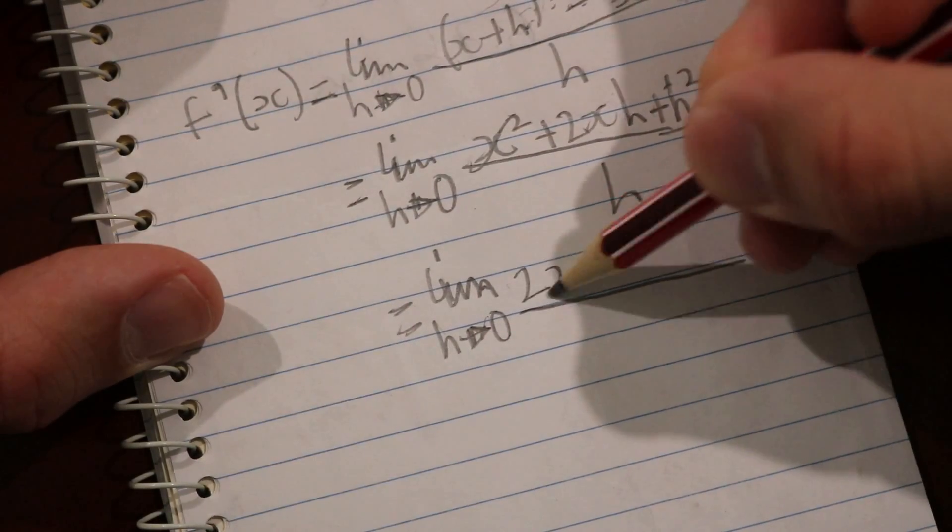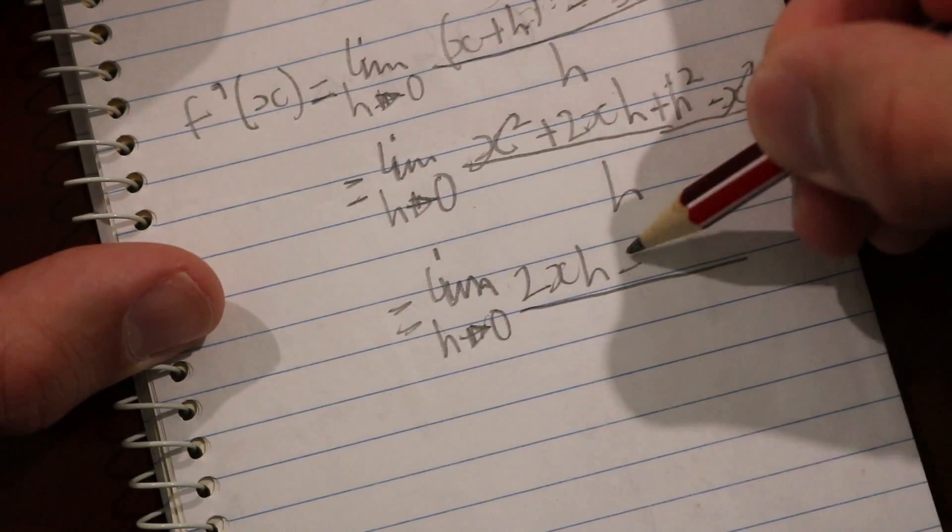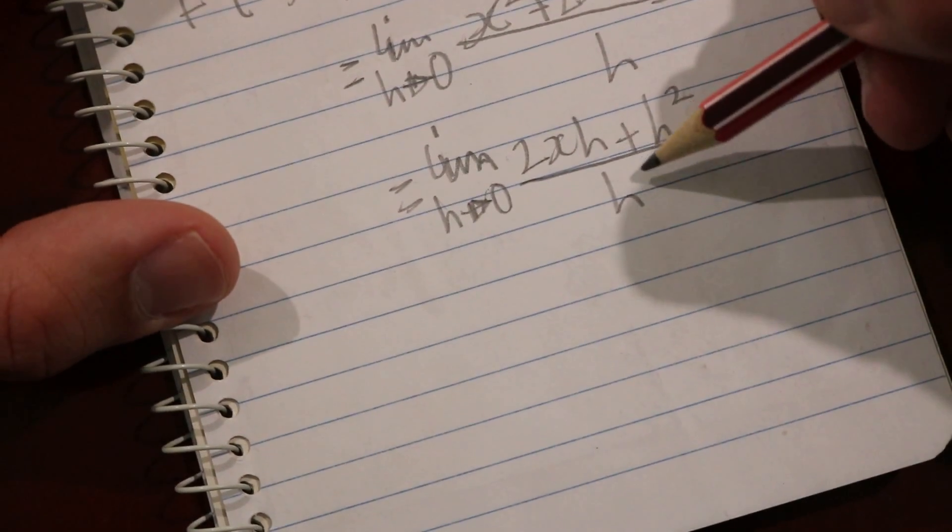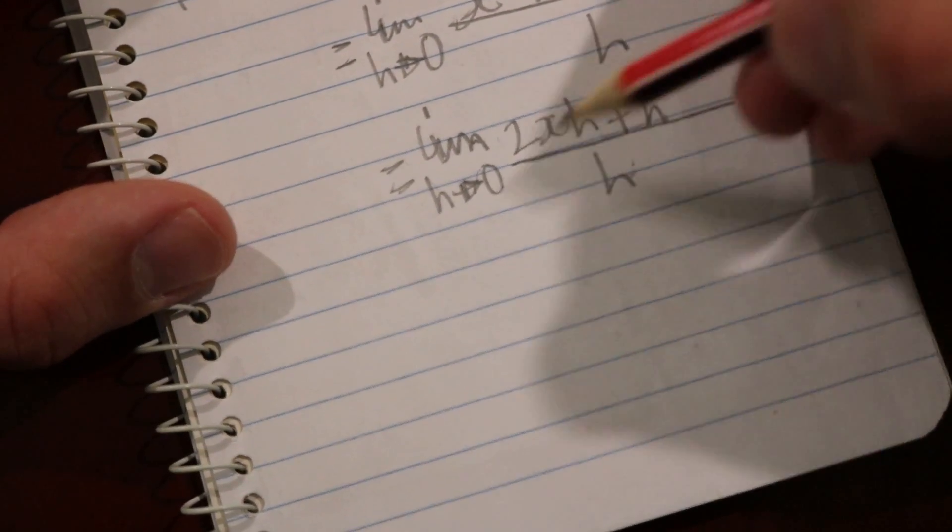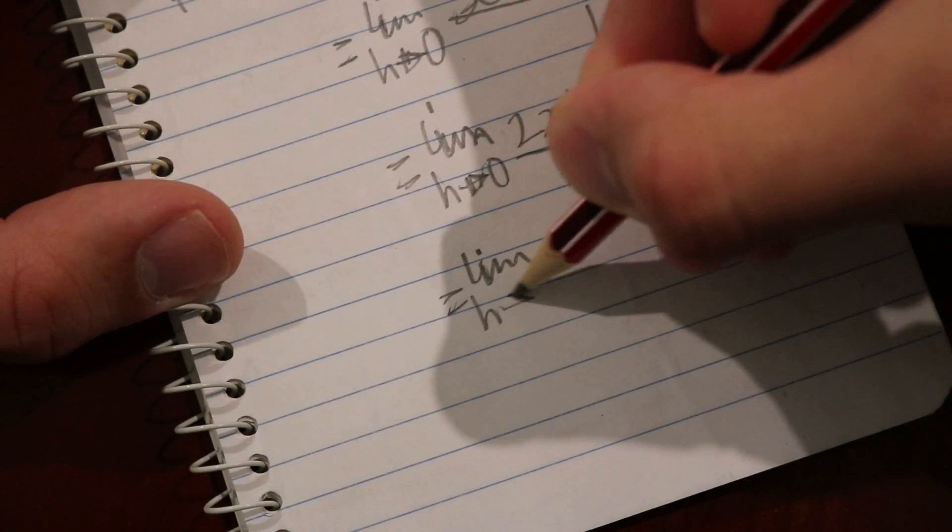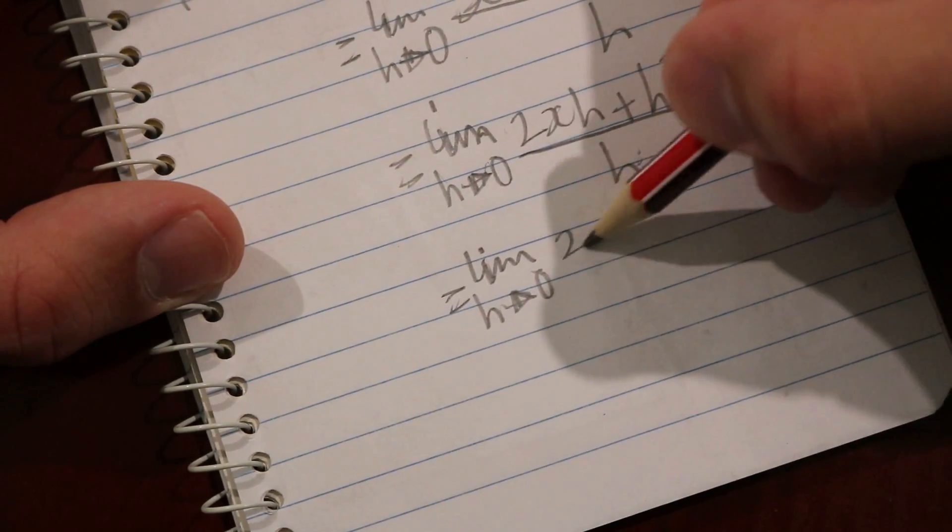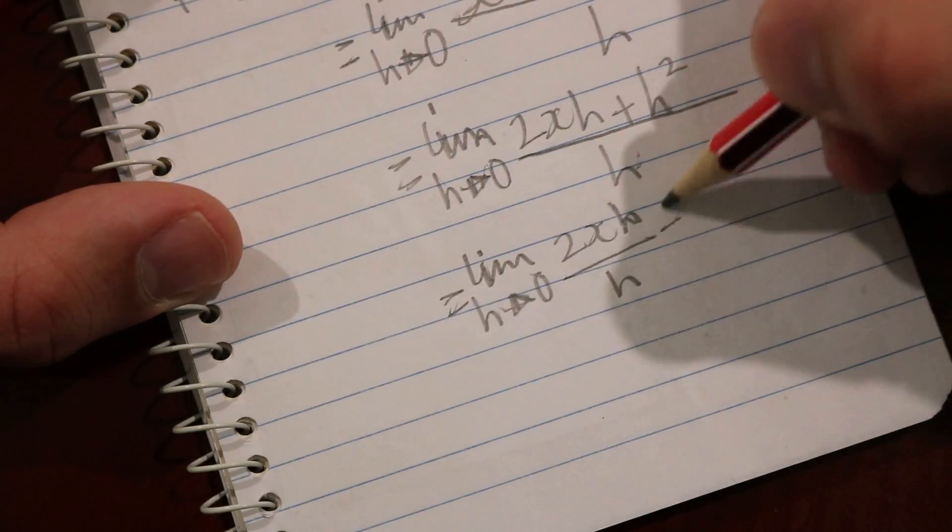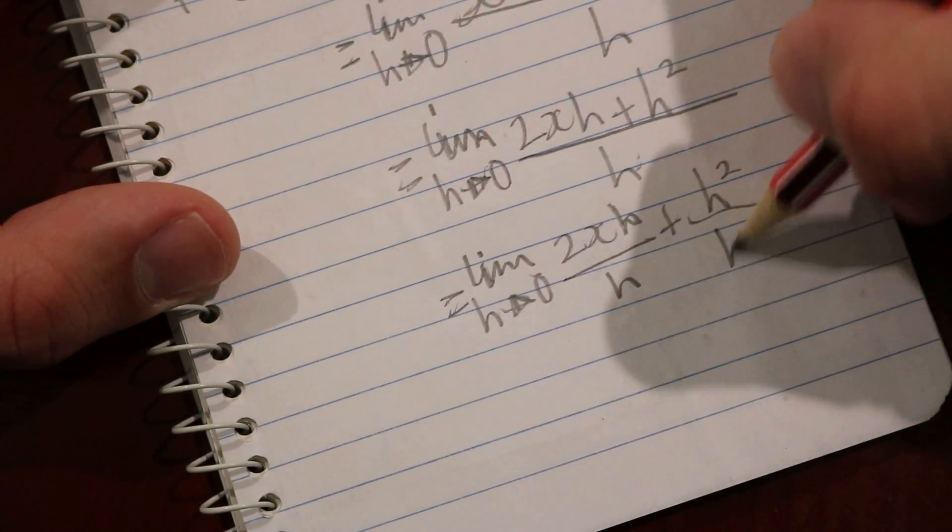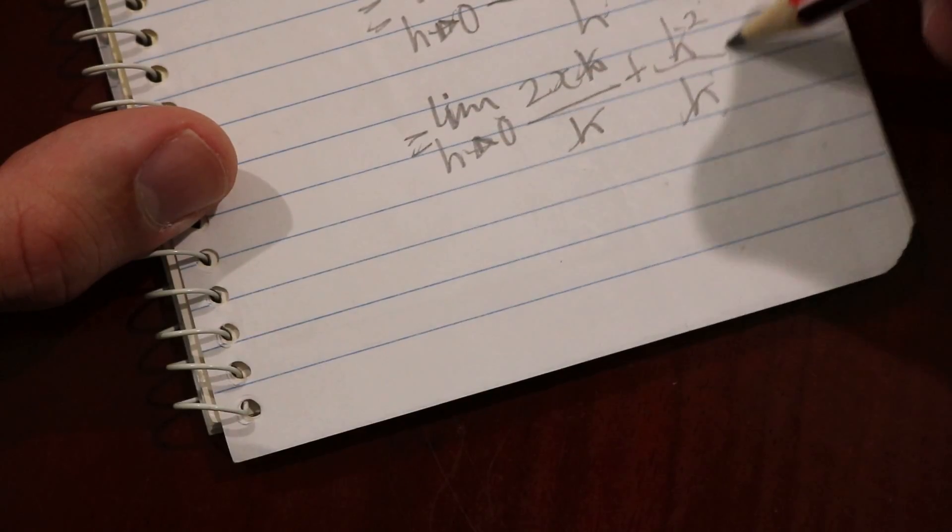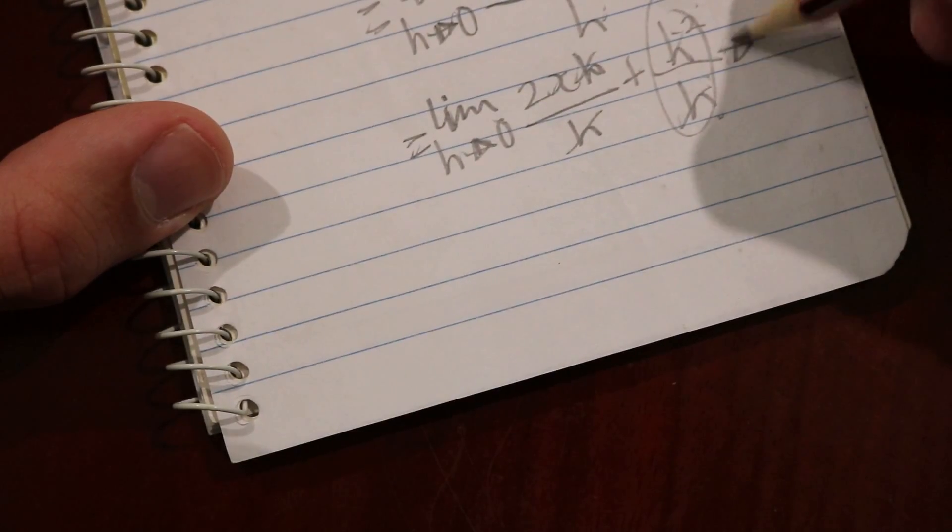That would be (2xh + h²)/h. If we expand this fraction out, this becomes the limit as h approaches 0 of 2xh/h + h²/h. The h's cancel out.